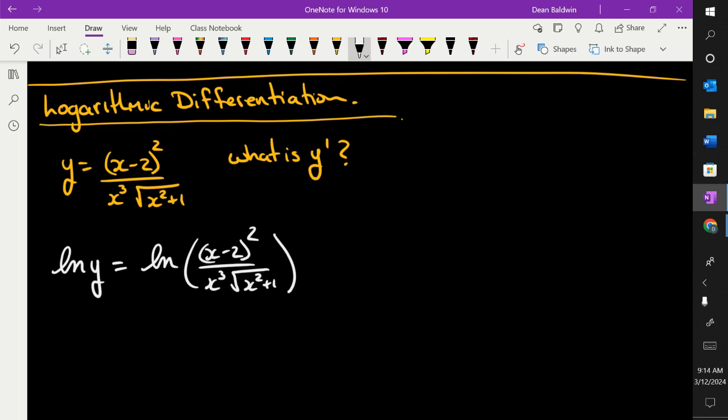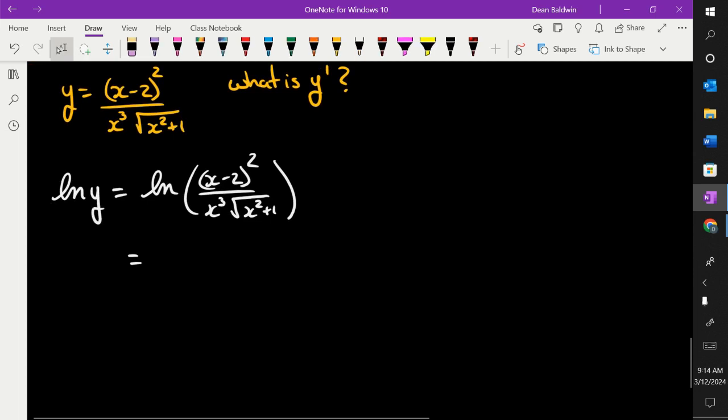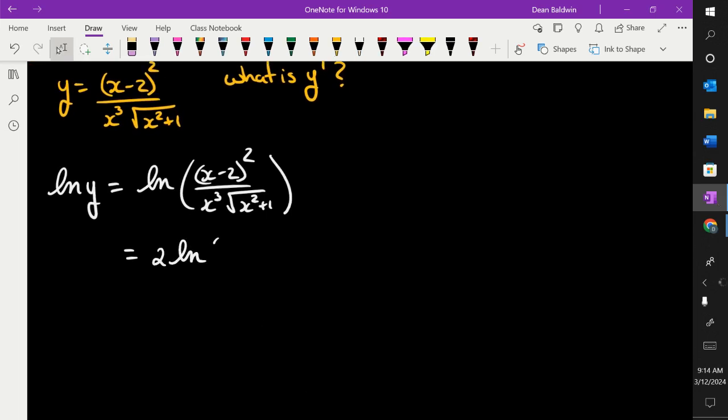We can then break up the right-hand side, just like we've been doing. So I'm going to get two natural log x minus two minus three natural log of x minus one-half natural log x squared plus one. Does everybody understand what I just did? I did it in one step. I broke up the right-hand side and dropped the exponents down. Are we good with that?